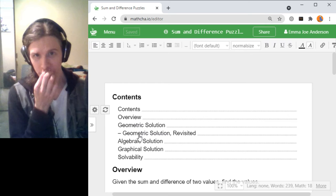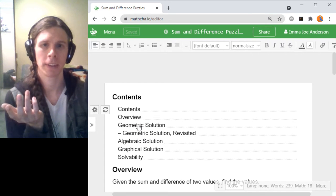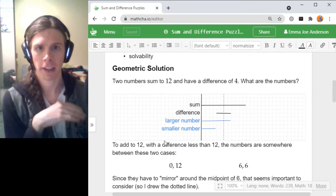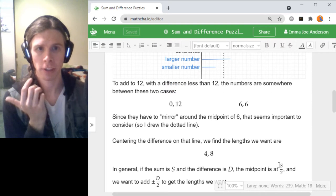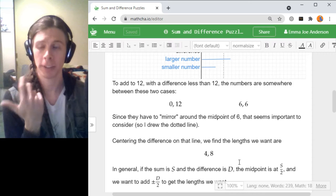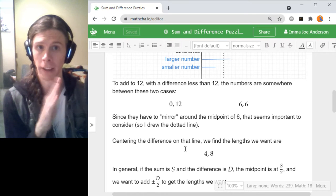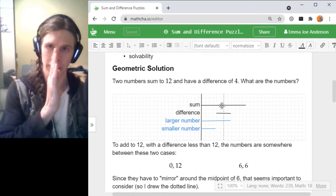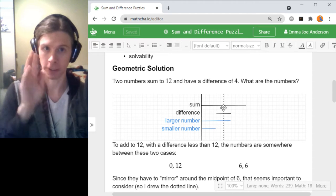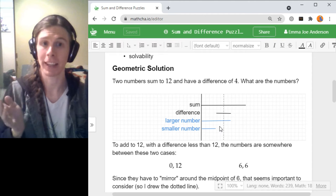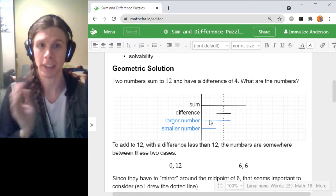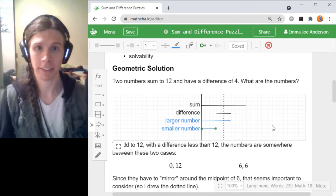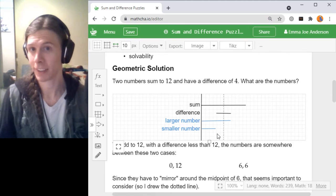So we had last messed with the geometric solutions or one geometric solution and an algebraic solution. Both arrived at a conclusion of like half of the sum plus or minus half the difference gives you the two values.